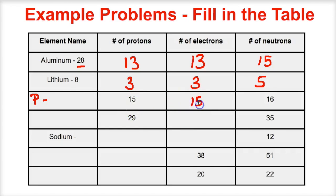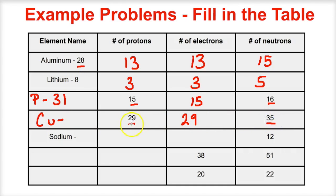Phosphorus has 15 protons, 15 electrons, and the mass number is 15 plus 16 equals 31 — so phosphorus-31. For the element with 29 protons: number 29 is copper — 29 protons, 29 electrons, and the mass number is 29 plus 35 equals 64, so copper-64. For sodium with 12 neutrons: sodium is number 11 — 11 protons, 11 electrons, and the mass number is 12 plus 11 equals 23, so sodium-23.